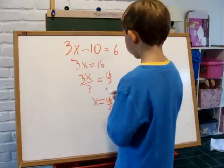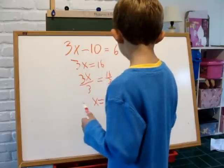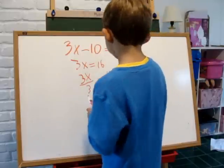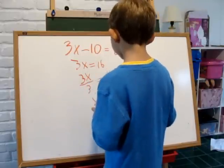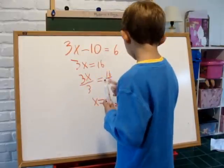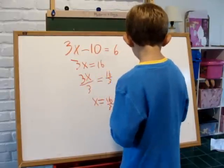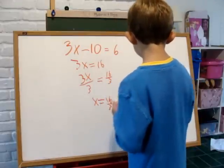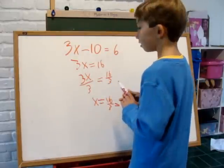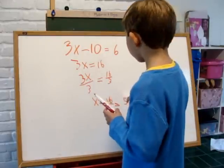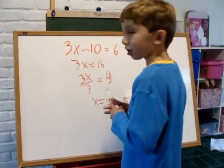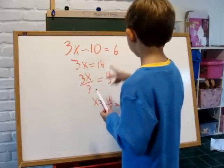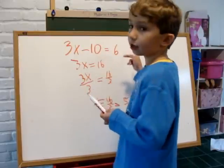Now we check it. 3 times 5 and a third: 15 plus 3 thirds. And 3 thirds is 1, so we get 16. And 16 minus 10 equals 6.